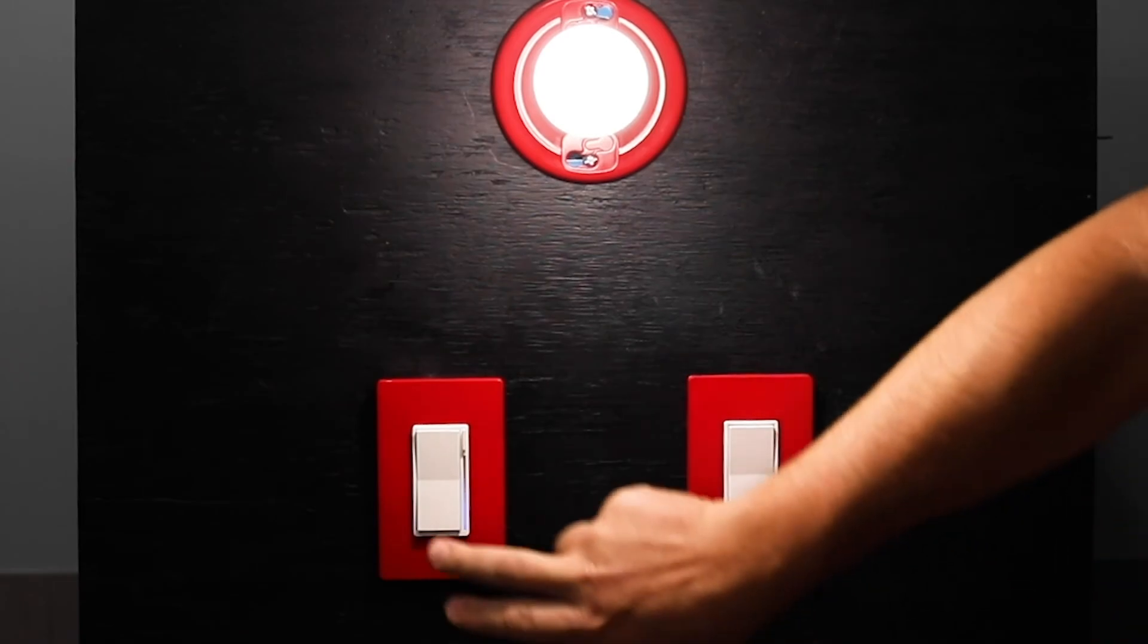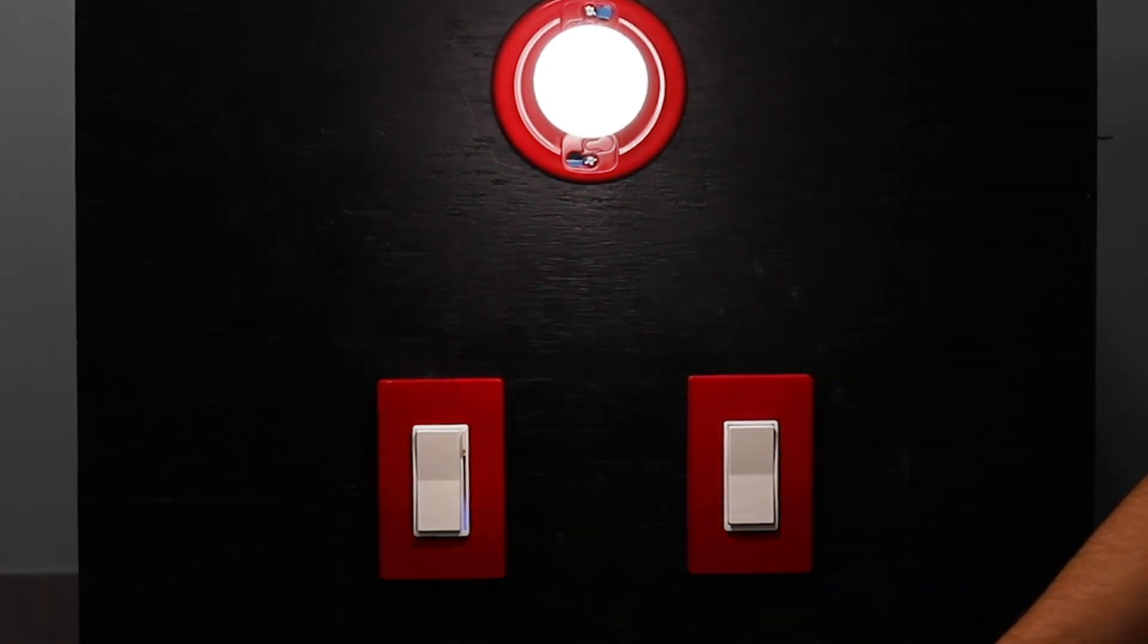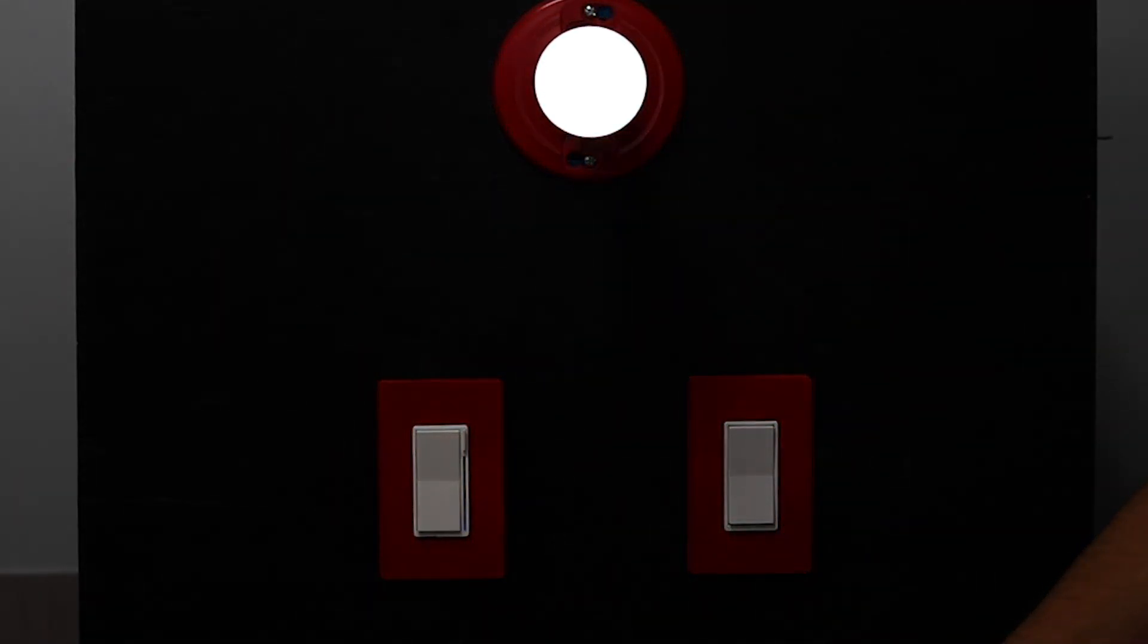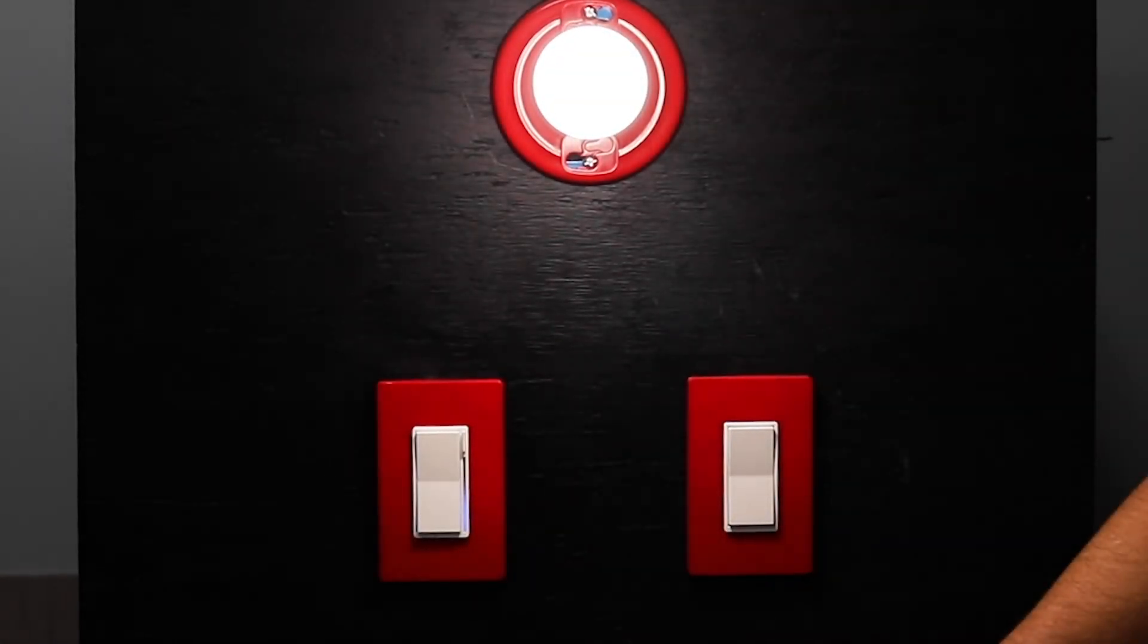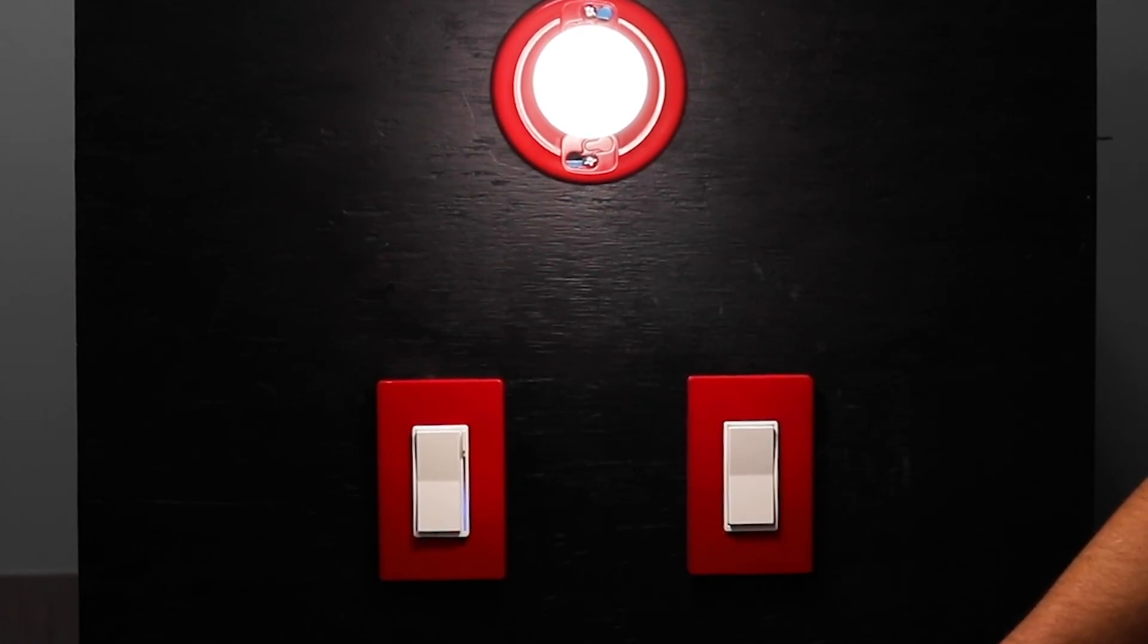So I'll screw my bulb back in. I can turn it off, turn it back on, and it'll only go up to 79% on the bulb. So that's how you set your max dim level.